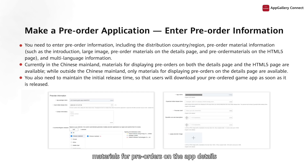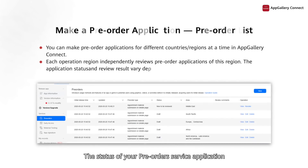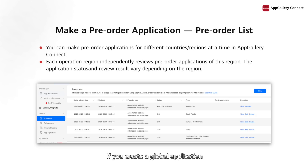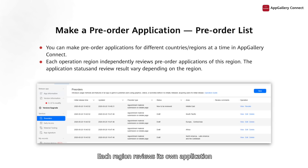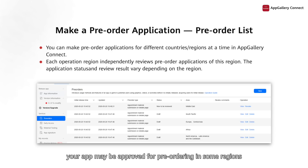Currently, materials for pre-orders on the App Details page are available globally, and such materials extract information such as app introduction, brief intro, and screenshots from the app information page. The status of your pre-order service application will be displayed on the application list page. If you create a global application, it will be split into sub-applications, each for a different operations region. Each region reviews its own application, and the results may vary between regions. In other words, your app may be approved for pre-ordering in some regions but rejected in others.